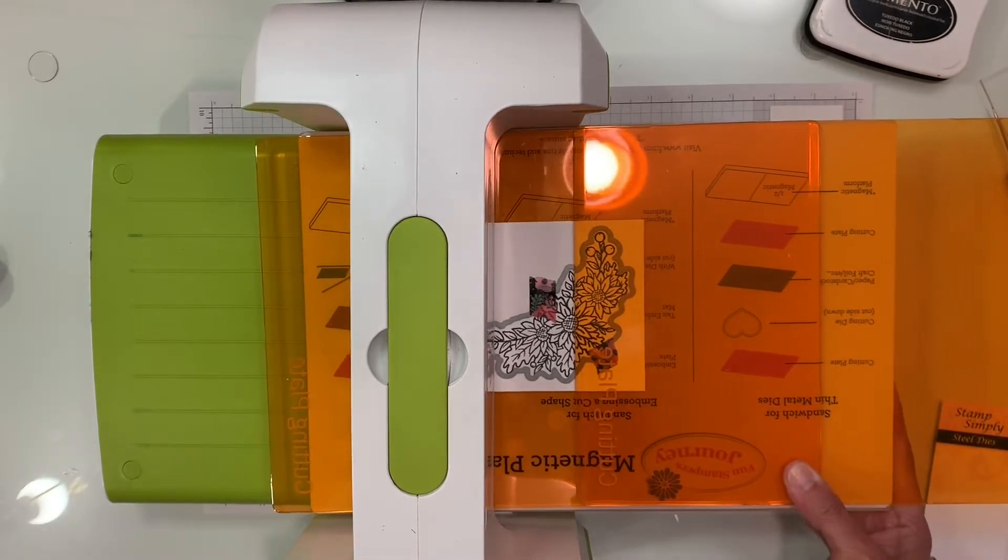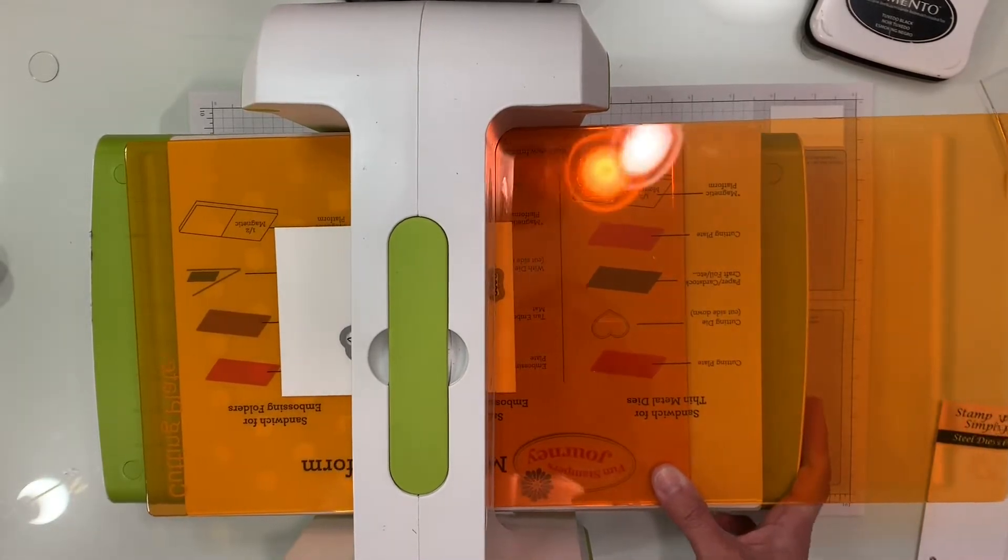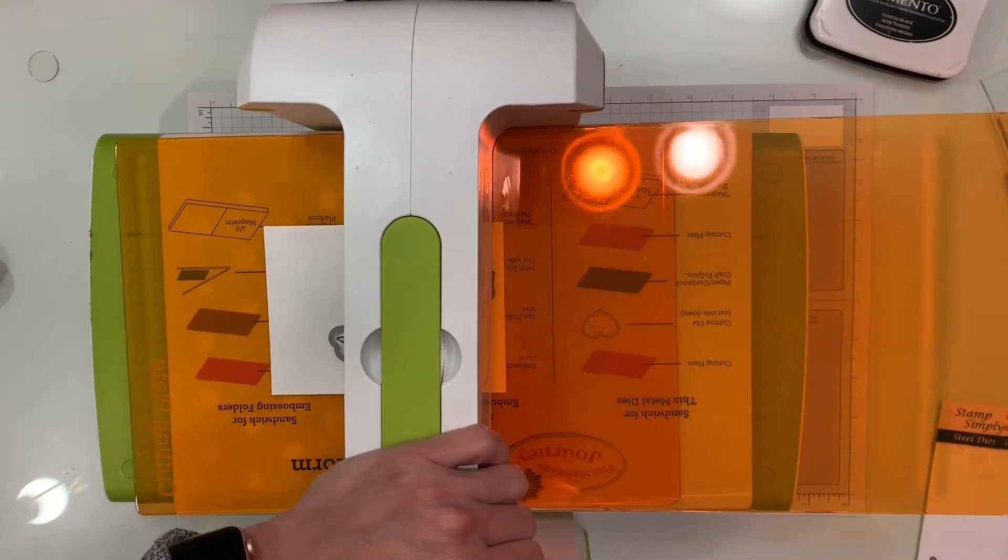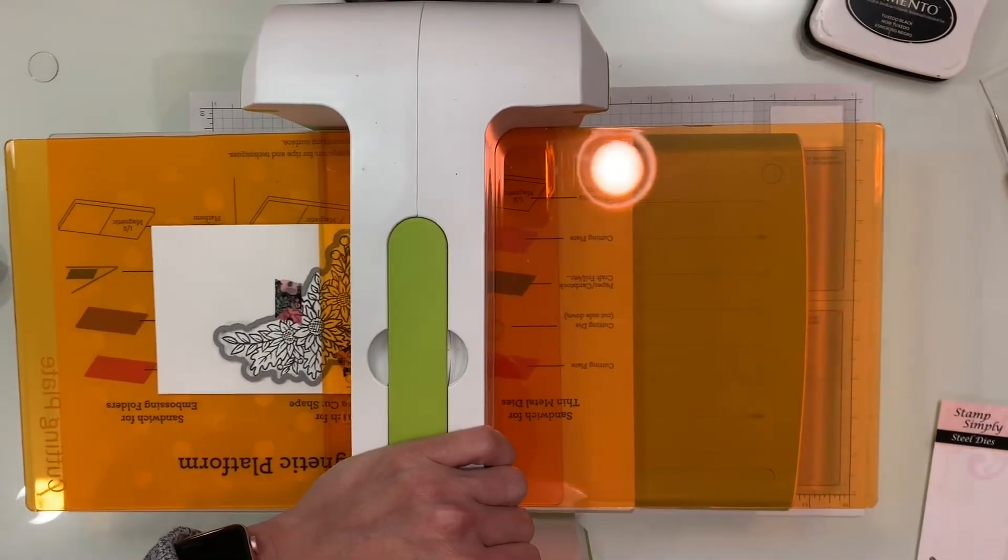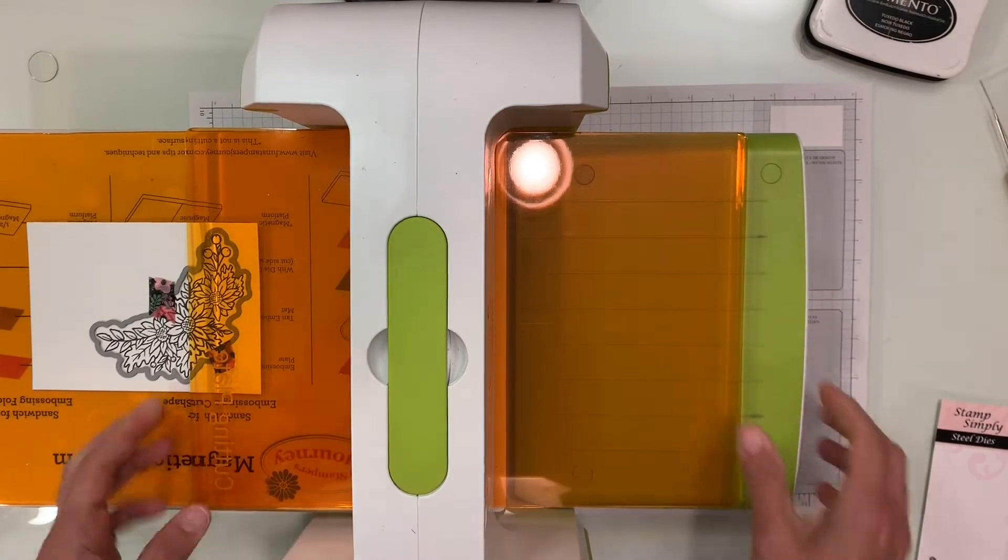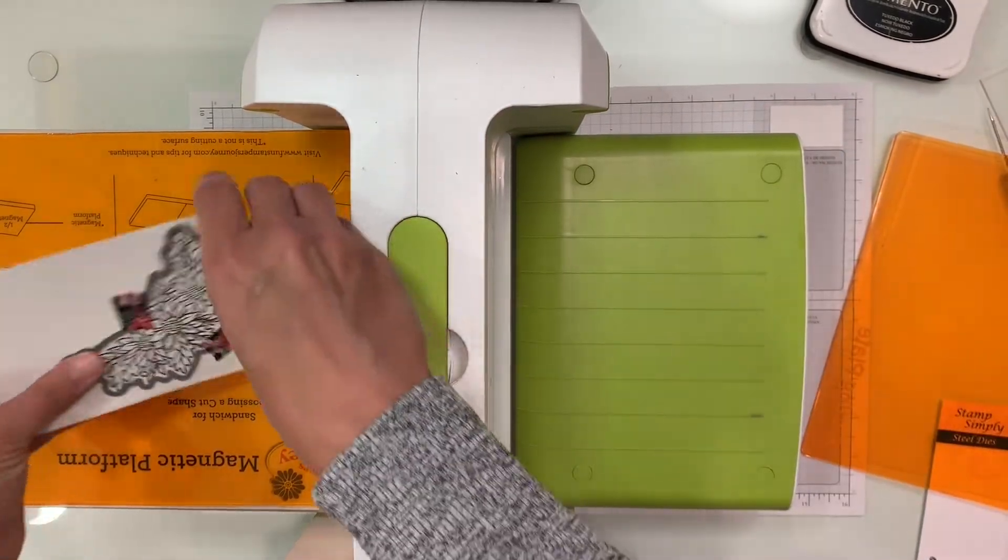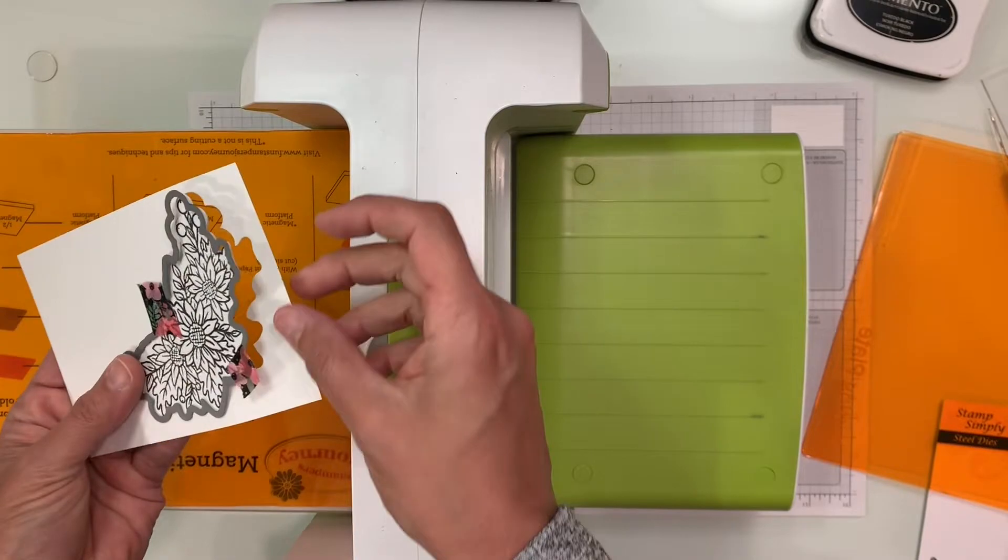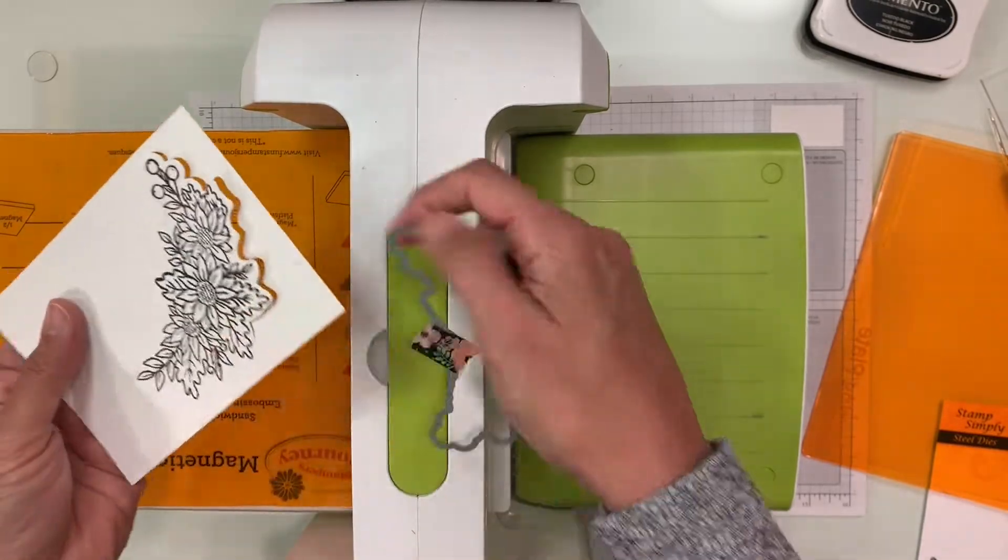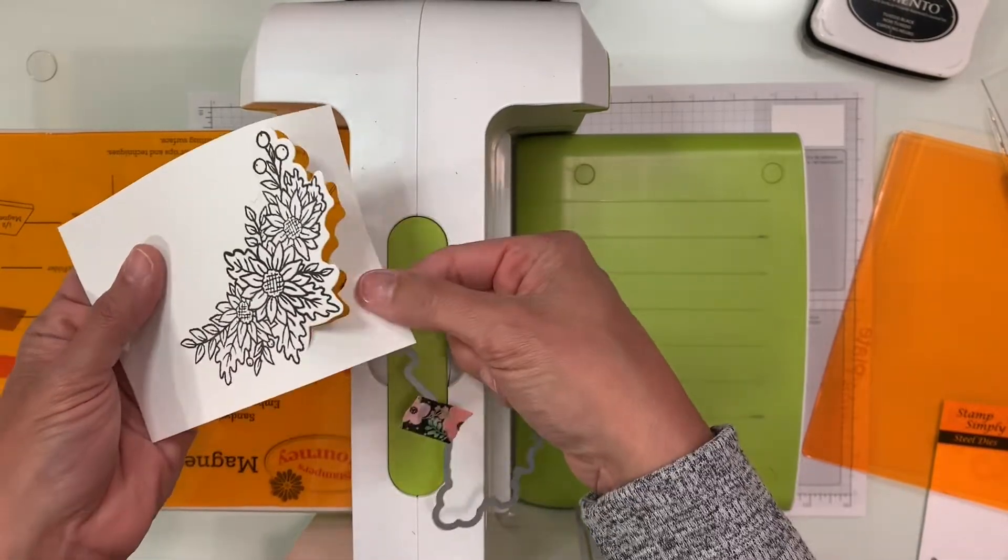So we're going to go ahead and run this through. You can see now I have brand new plates so they're going to crackle a little bit. When you take this off, you'll see that the bottom part is cut so you'll have this partial die cut like this.